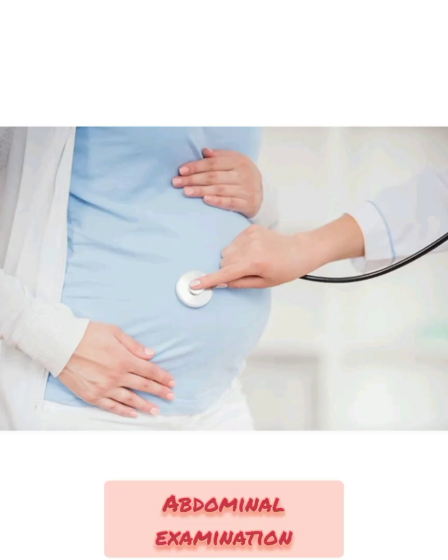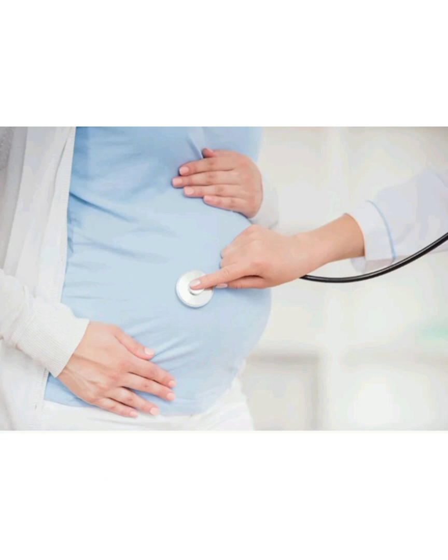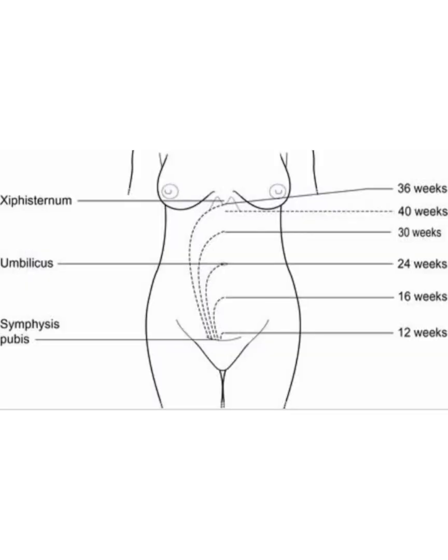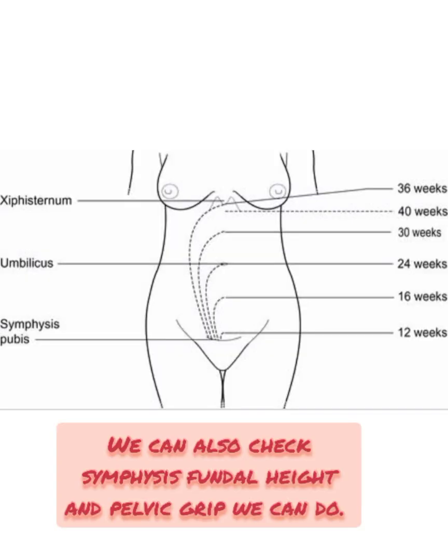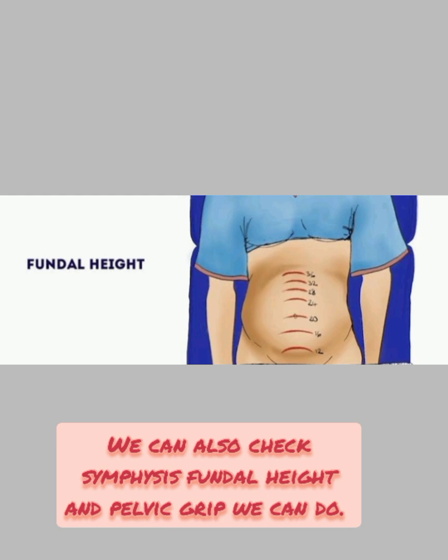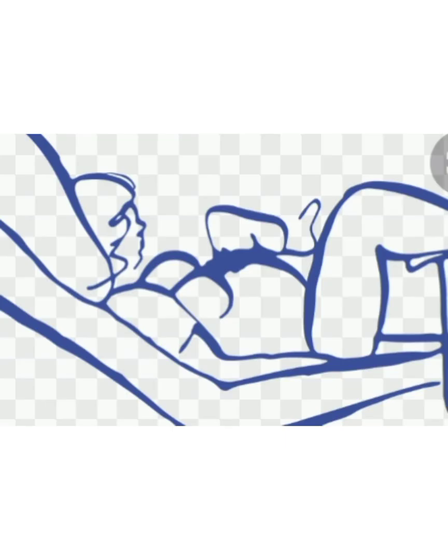In the obstetrical examination, we check the abdomen — the tonicity of the abdominal muscles, presence of any scar, incisional hernia, or other skin conditions or infections. We check the fundus of the uterus to confirm it is just palpable above the symphysis pubis at 12 weeks.